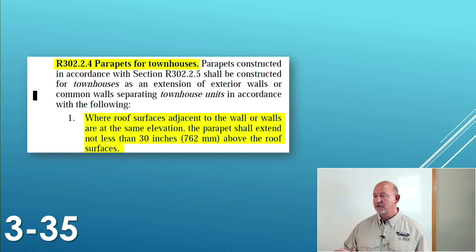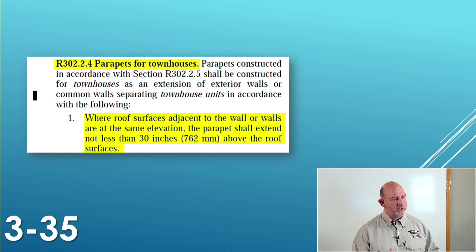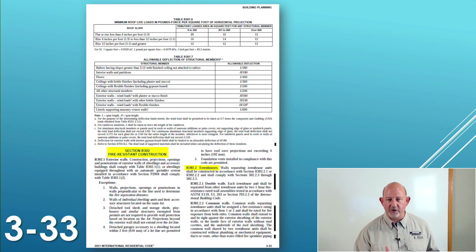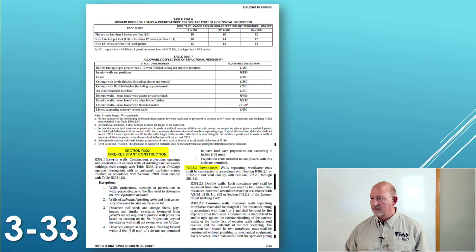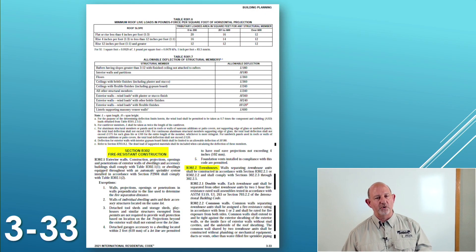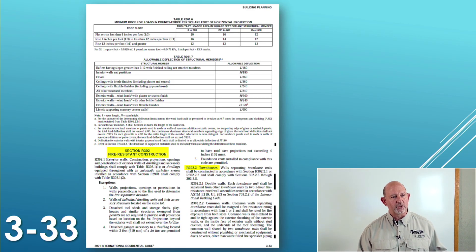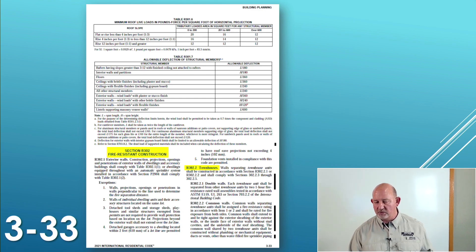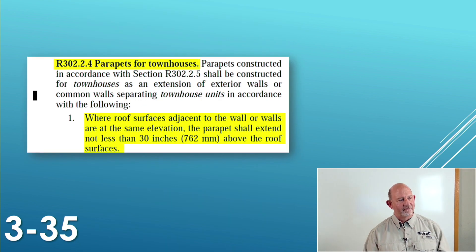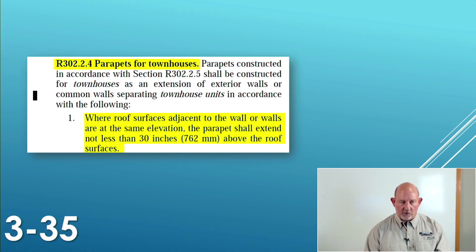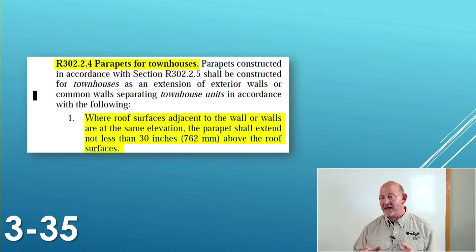Pay close attention — very easy, but you've got to get it. R302.2.4 is a subsection of R302.2. Let's look back at page 33. R302.2 is townhomes. Take the last number, make it go away — that's a subsection of 302. So: 302 is fire-resistant construction, 302.2 is townhomes, 302.2.4 is parapets for townhomes. This is going to tell me about the parapet on a townhome in regard to its fire-resistant construction, and nothing else.